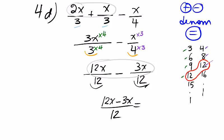We can go further here. 12x minus 3x will give us 9x over 12. And even further because 9 and 12 can both be divided by 3.